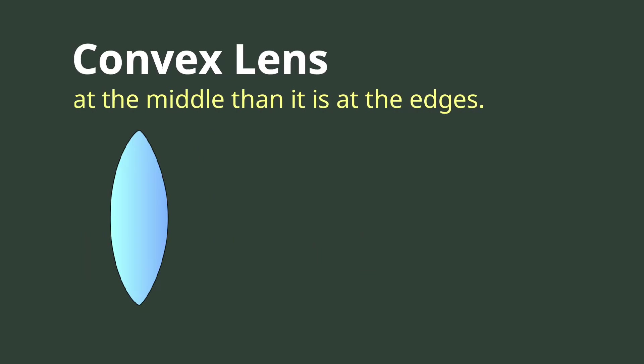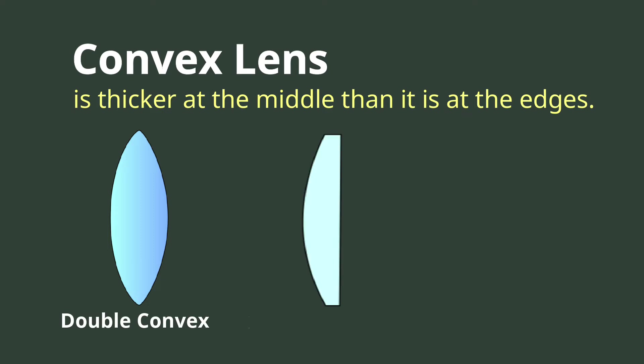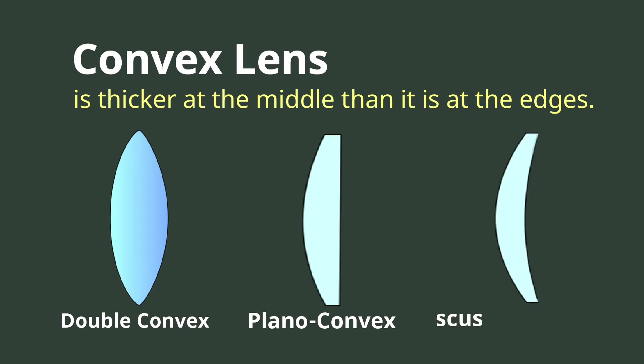A convex lens is thicker at the middle than it is at the edges. There are three different forms of the convex lens: double convex, plano convex, and convex meniscus.